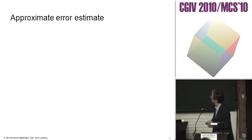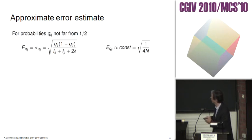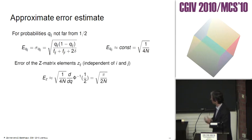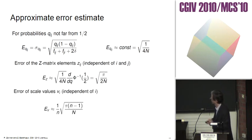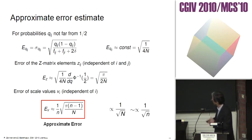We can make an approximation. If all probabilities Q_ij are not far from one half, then the error of Q is about constant. Similarly, the error of the C values is also constant. We go further with error propagation and get a second error estimation which is now independent of the stimulus: 1 over N times the square root of pi times N minus 1 over capital N. I call it the approximate error. Note that this is proportional to 1 over square root of capital N and 1 over square root of the number of stimuli.